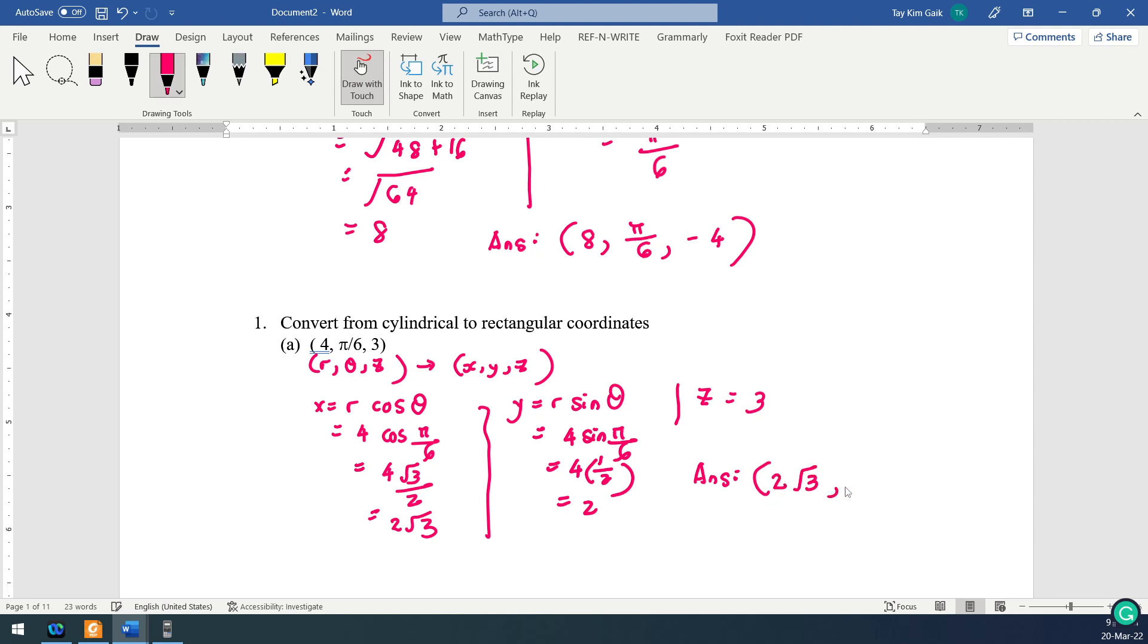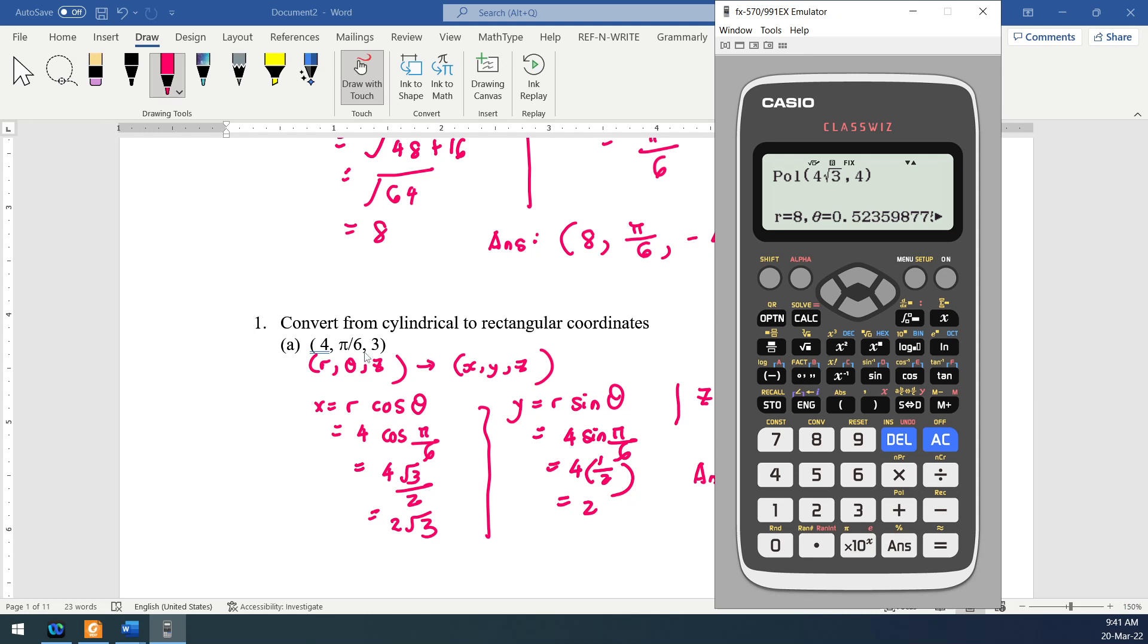Make sure you put back to the coordinate format. 2√3, and then x is 2√3, y is 2, z is 3. To check, you can use this one polar to rectangular. So you want rectangular. So shift, rectangular. So r is 4, comma is here, pi over 6. So y is 2, 2√3.